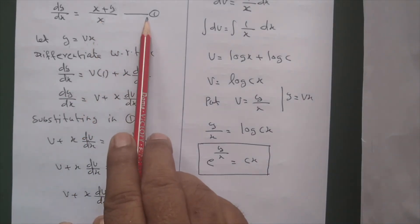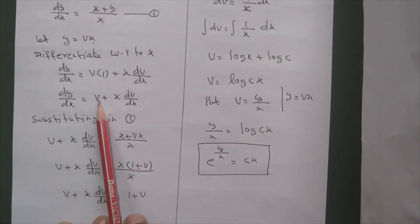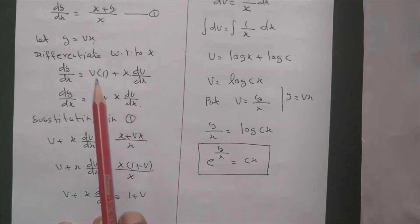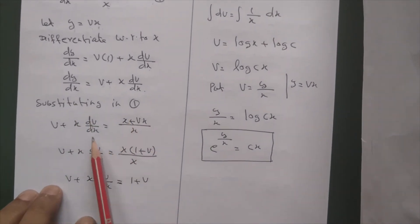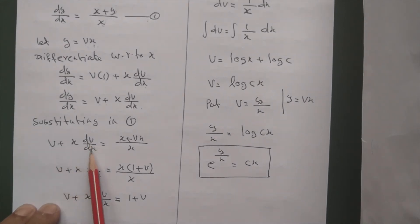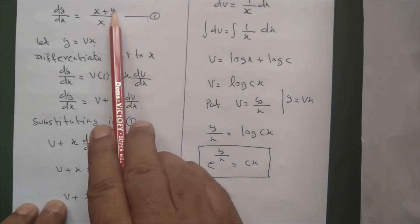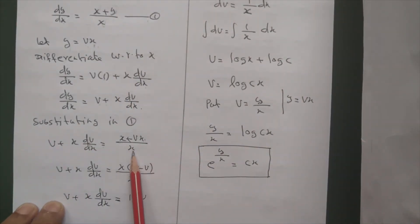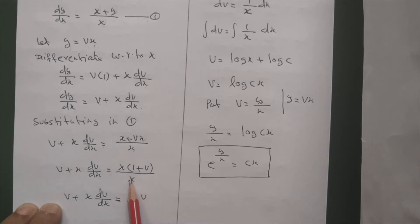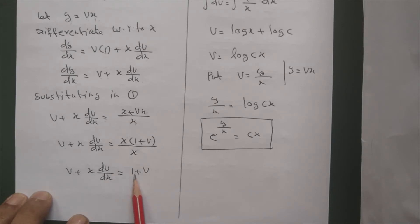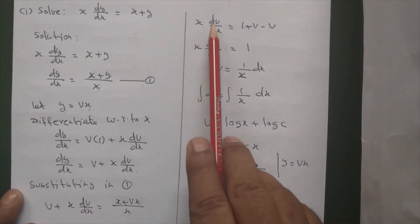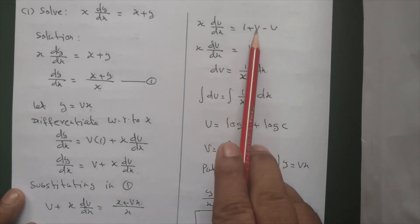Now substitute into equation 1. On the left side, replace dy/dx with v plus x dv/dx. On the right side, replace y with vx. So v plus x dv/dx equals (x + vx)/x. Taking x common in the numerator: x(1 + v)/x, the x cancels. We get v plus x dv/dx equal to 1 plus v. Moving v to the right side: x dv/dx equals 1 plus v minus v. The v terms cancel.